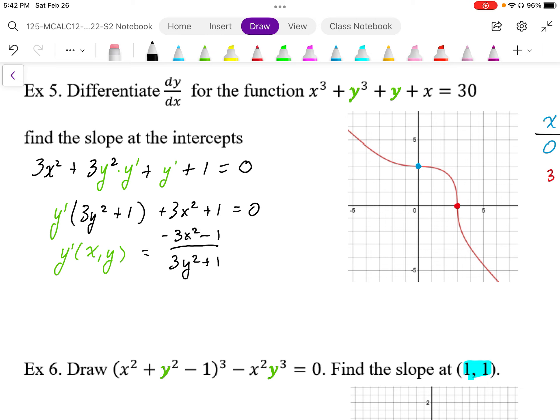So plugging in my x intercept, I'm going to get my slope through my x intercept. So y prime at x is 0, y is 3. So at (0, 3), that's going to give us a slope value of negative 1 over, when I plug in y is 3, I'm going to get 28. So I have a very shallow slope through that point, looks almost horizontal, of negative 1 over 28.